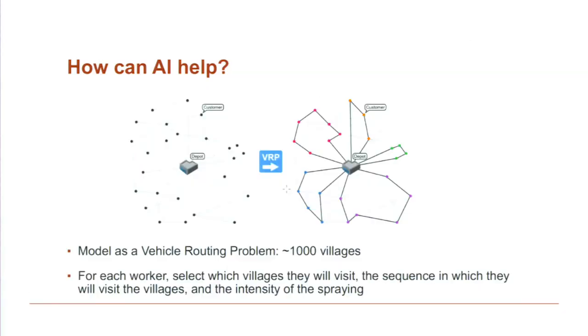AI can actually help address this problem. We can view this as follows: we have a finite number of health workers that can start at a particular village in India, and for each health worker we can decide which villages they will visit and the sequence in which they visit them. This is a vehicle routing problem. When a health worker visits a village, they conduct the spraying, and we can decide the intensity. Depending on the intensity, we eradicate a certain proportion of the flies, which prevents a certain portion of the disease from spreading.